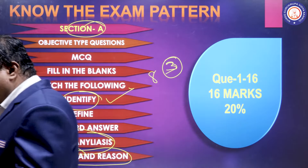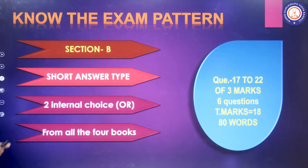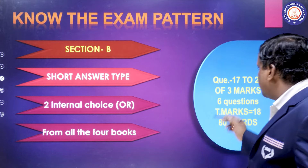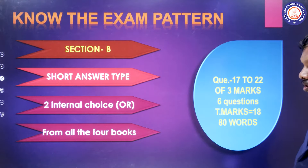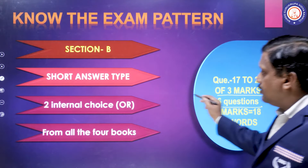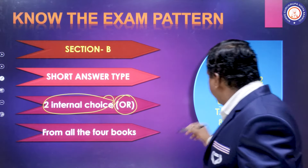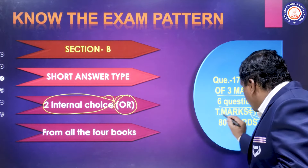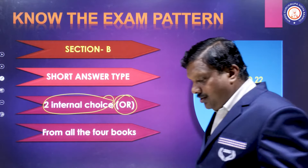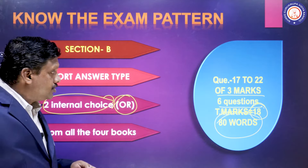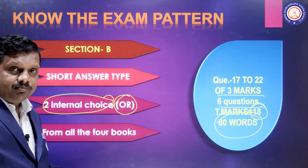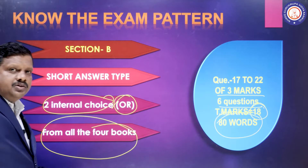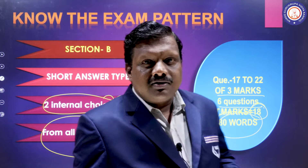Section B is short answer type questions — question numbers 17 to 22, worth three marks each. There will be six questions with two internal choices. The total mark is 18. You have to write this answer in not more than 80 words. These questions will be from all four books: History, Civics, Economics, and Geography.